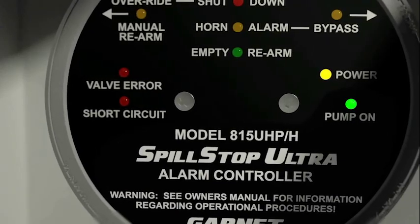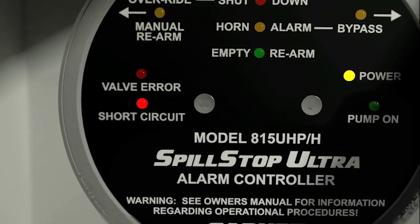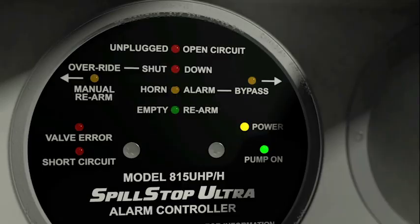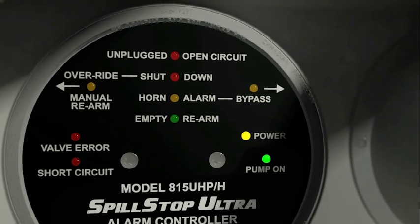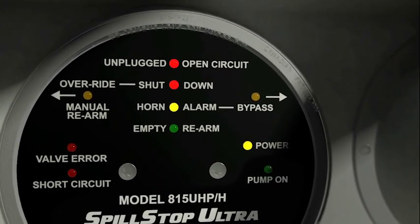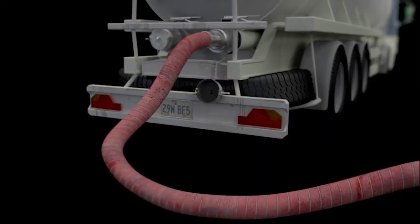A short circuit in the wiring to the gauge lights the red short circuit indicator and shuts down the pump. An open circuit in the wiring to the gauge lights the red unplugged indicator, sounds the horn, and shuts down the pump.